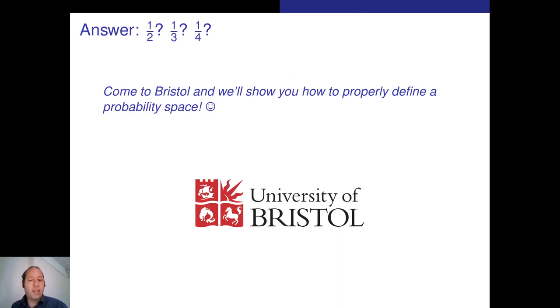So is it one half, or is it one third, or is it one fourth? Well, that's exactly what Bertrand's paradox is. Dropping a random chord on a circle is not a well-defined probability space. If you come to Bristol, we'll show you how to properly define a probability space. So looking forward to seeing you here.